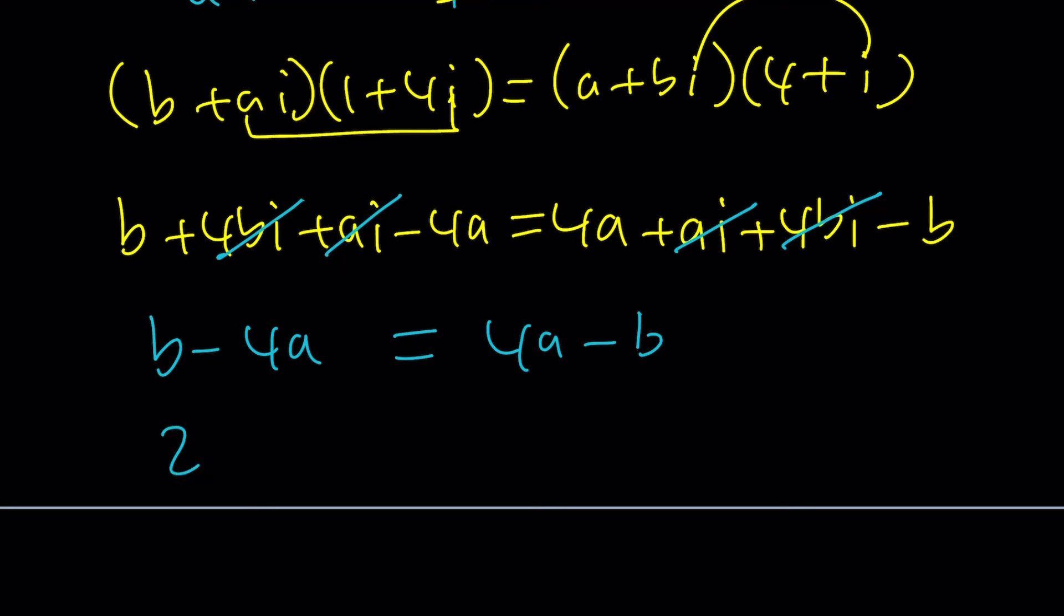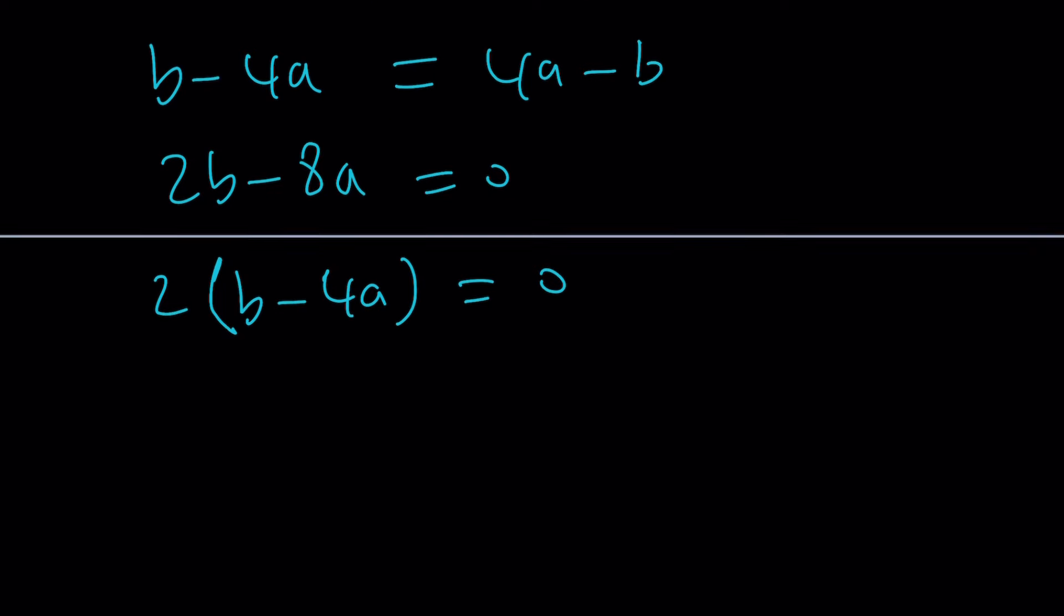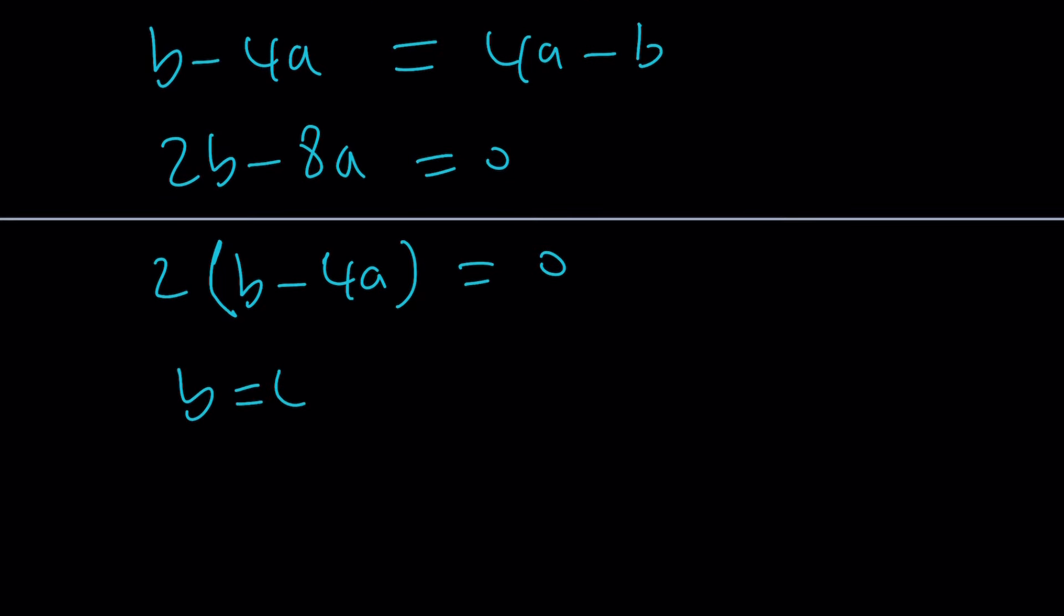But don't take my word for it. Let's go ahead and put everything on the same side and then from here factor out a two and you'll get the answer. Yay! We got B equals 4 A.